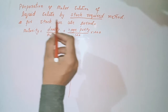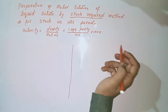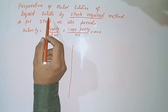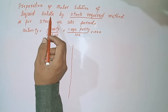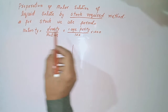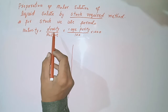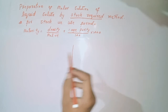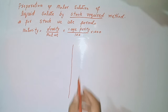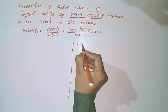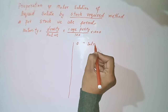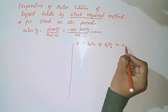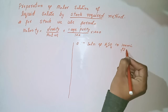Preparation of molar solution of liquid H₂SO₄ by the stock required method. We want to prepare the molar solution of liquid H₂SO₄, which exists in liquid form. By the stock required method, we use the formula: molarity equals density divided by molecular weight, multiplied by percentage purity over 100, multiplied by 1000. We want to prepare 0.1 molar solution of H₂SO₄ in a 100 ml flask.